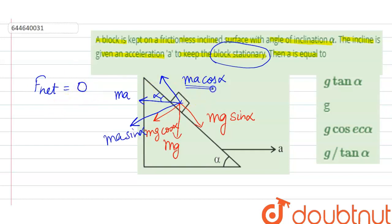So that means this force is balanced by this force. So that means ma cos alpha should be balanced by mg sin alpha.